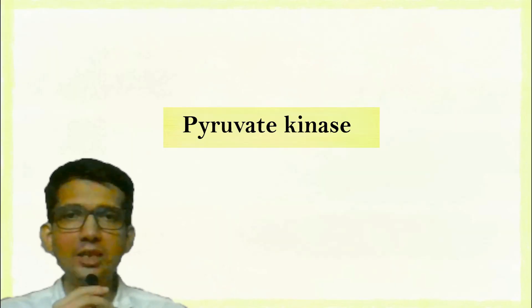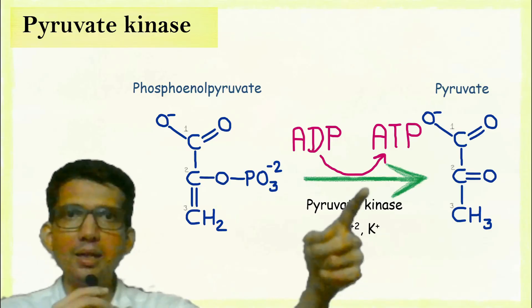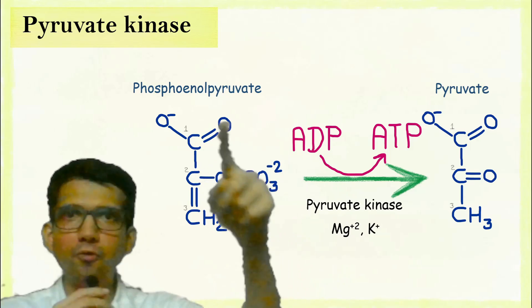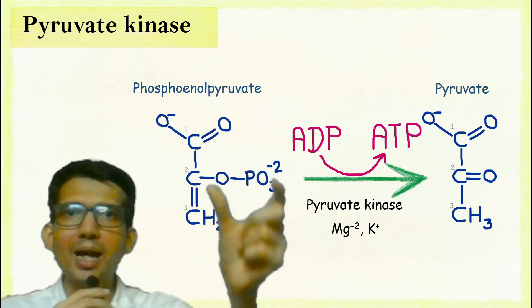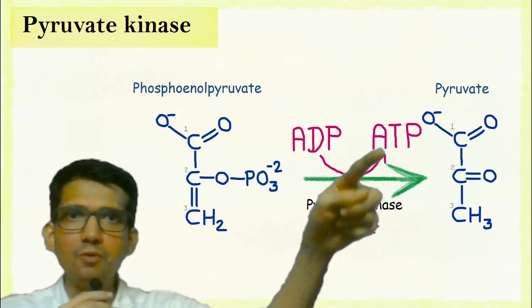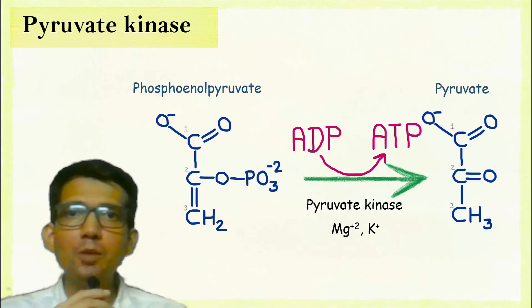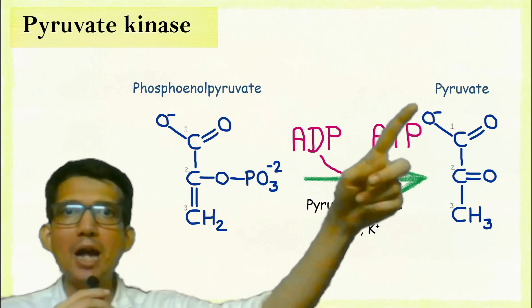Now, let's talk about the enzyme pyruvate kinase. This enzyme takes away this phosphate from phosphoenol pyruvate and transfers this to ADP which gets converted into ATP. The final product so formed is pyruvate.